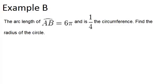Example B. The arc length of arc AB equals 6π and is 1 fourth of the circumference. Find the radius of the circle.